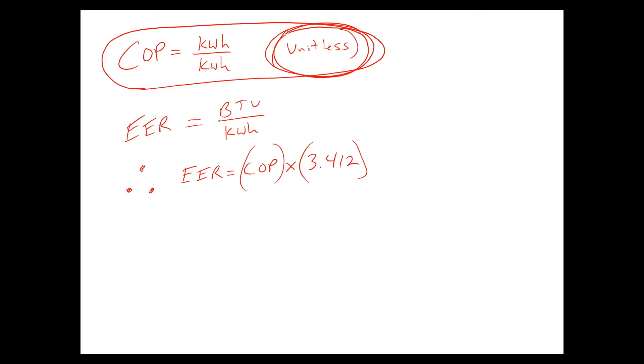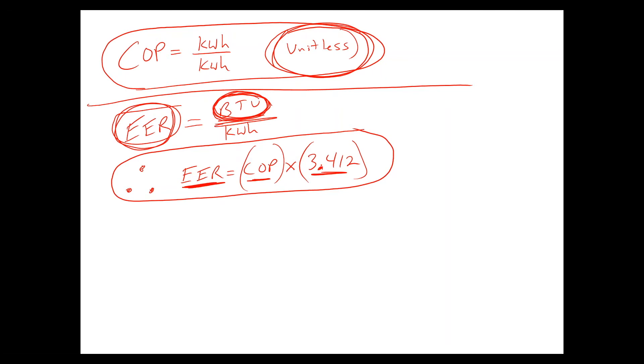But when you come to the United States, we often don't use COP because we use a different term that has BTUs on the numerator. And because we have BTUs, because that's how we like to express heat flows in the United States, because we have BTU over kilowatt hour, it's no longer unitless. So we use this term called energy efficiency ratio. In fact, if you know the COP, you can always find the EER because they're linearly related. So the EER equals the COP times 3.142, which is basically just accounting for the difference between kilowatt hours and BTUs. So we have, we've talked about COP, we've talked about energy efficiency ratio. There's two more concepts I want to get across.